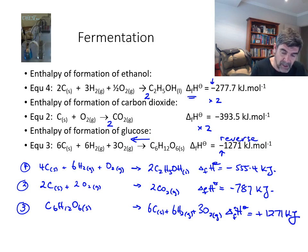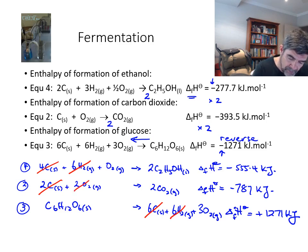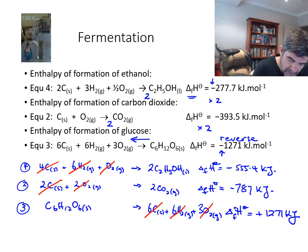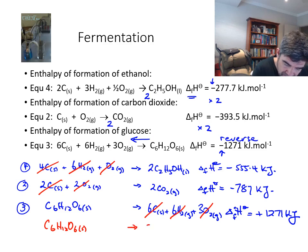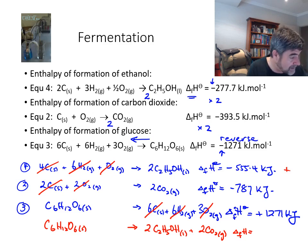Now we do what we did previously — go through and see how many of these things we can cancel out. We've got 4 carbons and another 2 carbons and 6 carbons over here, so four and two is six and we can cancel out the carbons. We've got 6 hydrogens here and 6 hydrogens there, so we can cancel them out. We've got 2 plus 1 is 3 oxygens there and 3 oxygens there, so we can cancel them out as well. That leaves us on the left-hand side with C6H12O6 solid, and on the right-hand side 2C2H5OH liquid and 2CO2 gas. The delta H value is minus 555.4 plus minus 787 plus 1271, which gives us a total of negative 71.4 kilojoules.